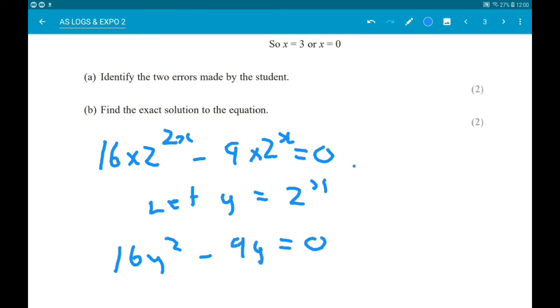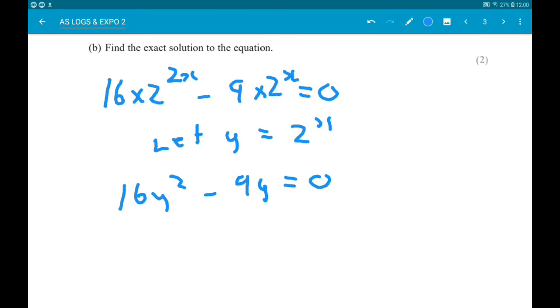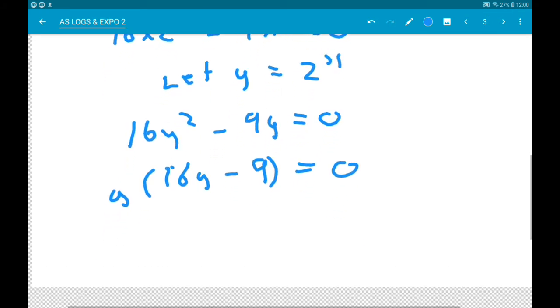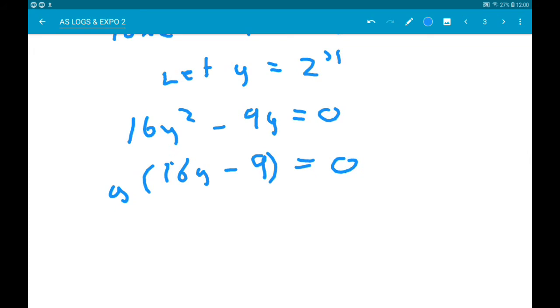Now factorize that. We get y times 16y minus 9. And that is equal to 0. So from that, y is either 0 or y is 9 sixteenths.